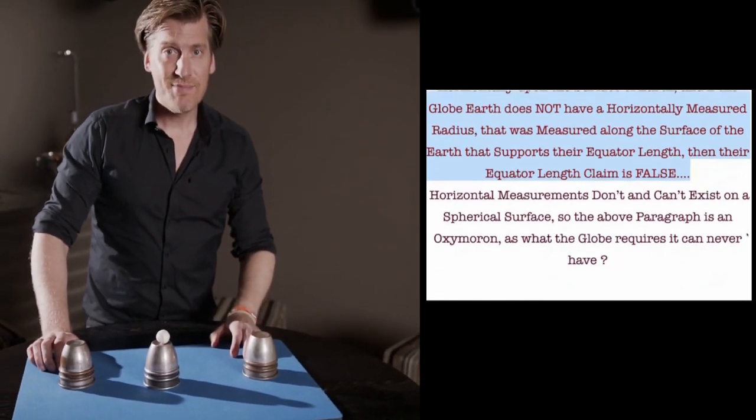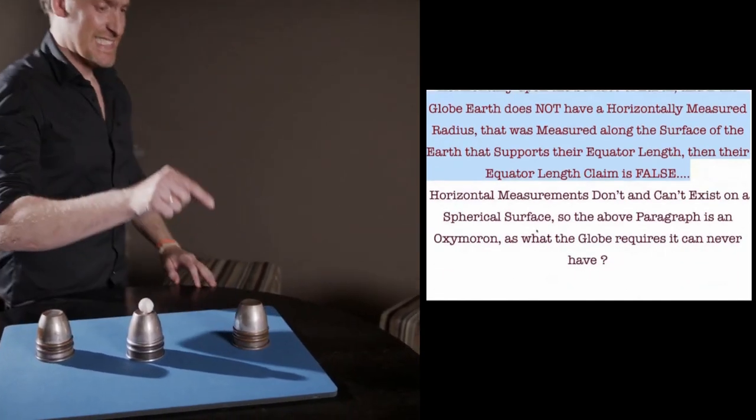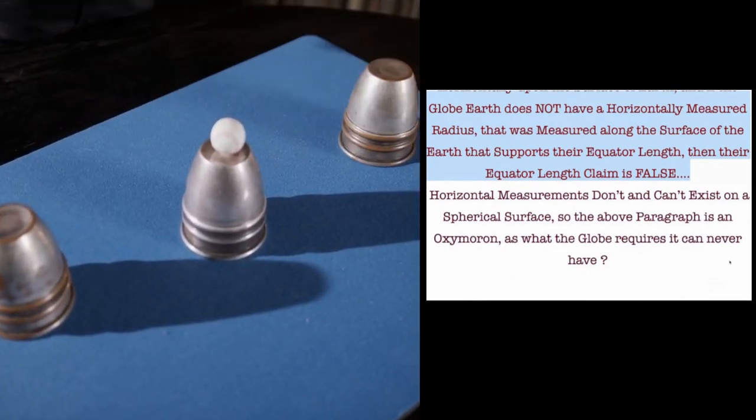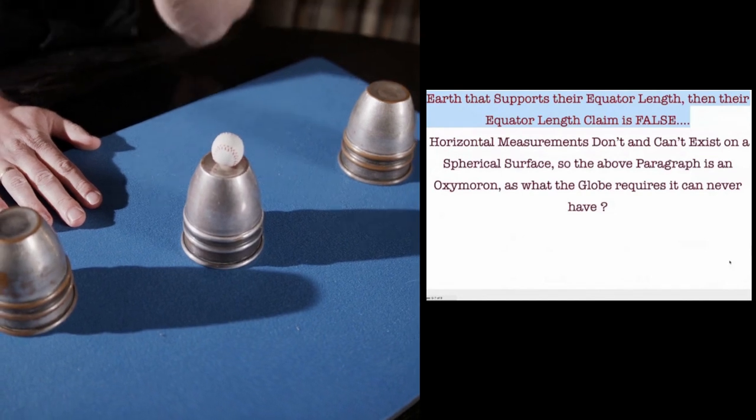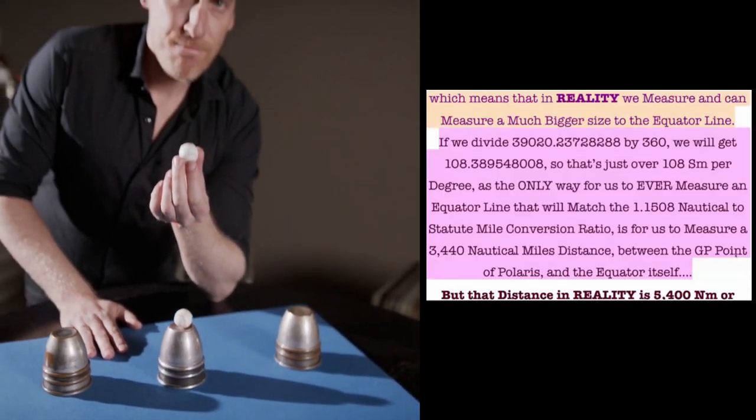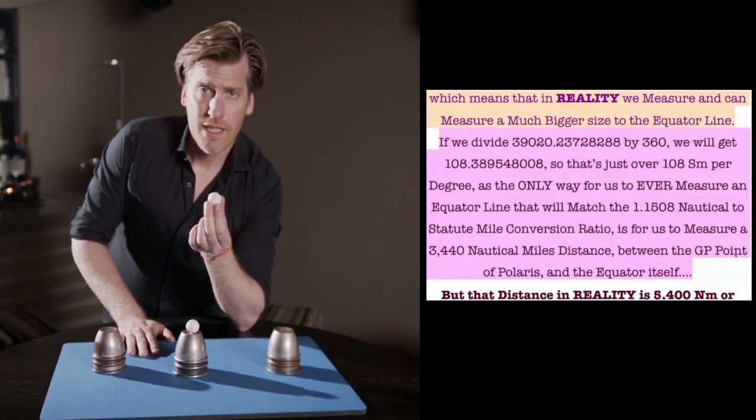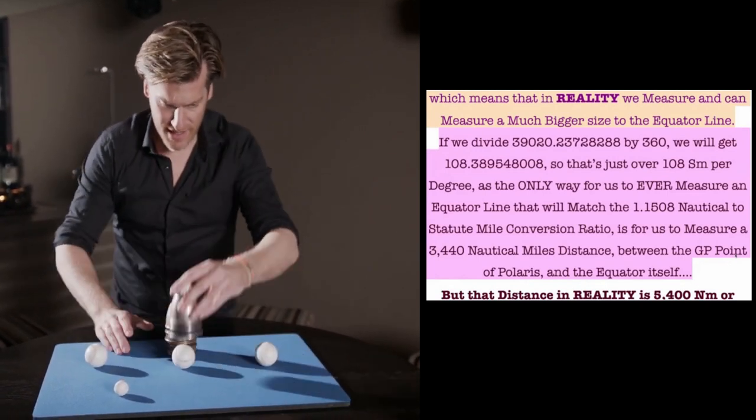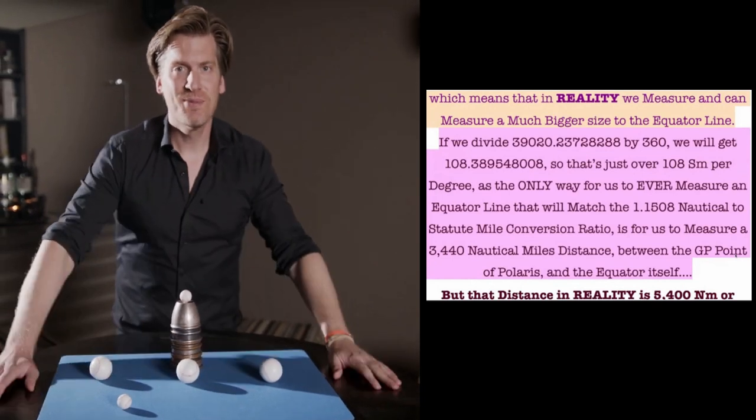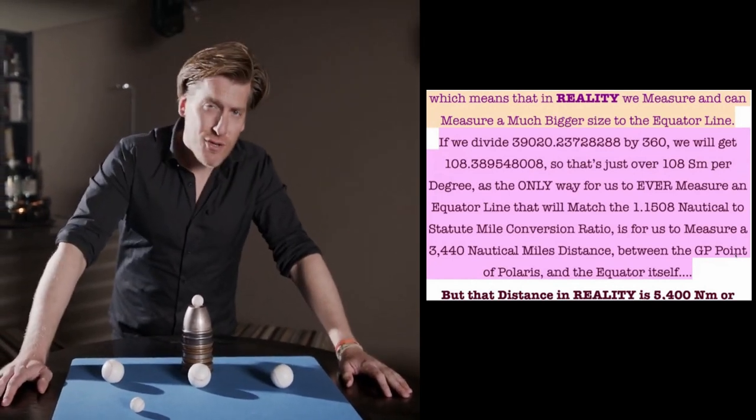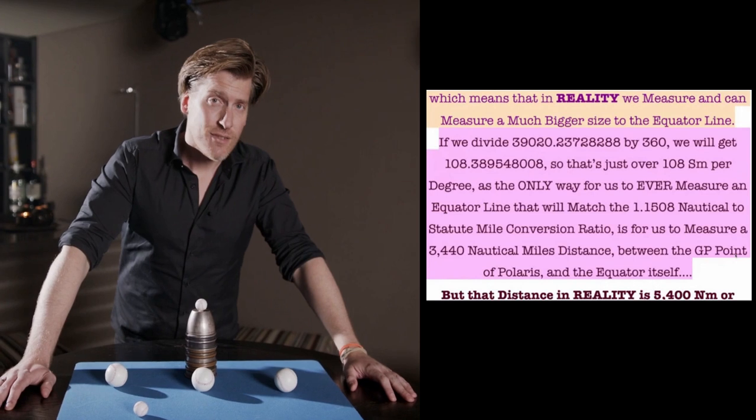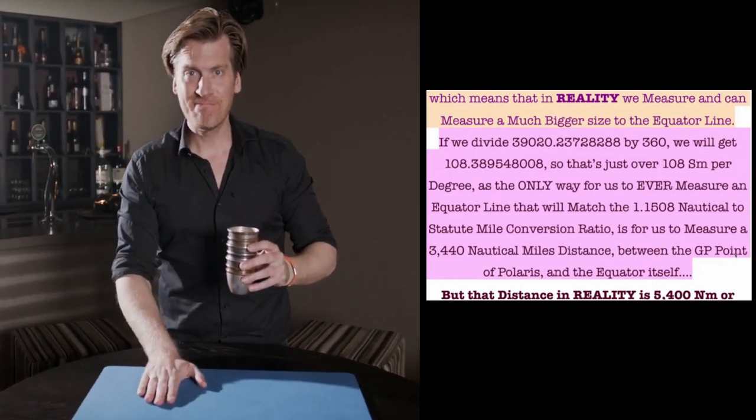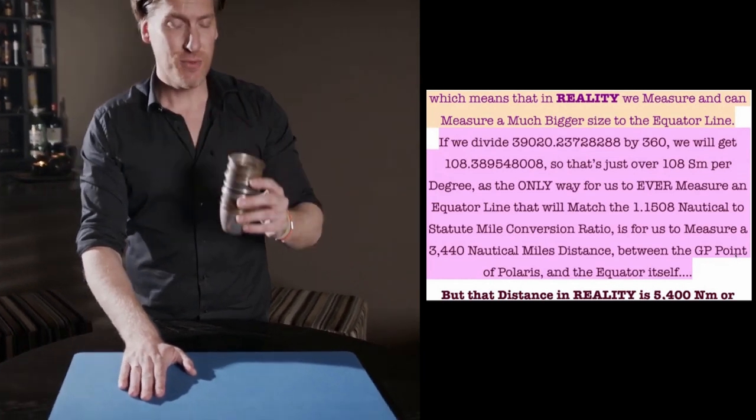Horizontal measurements don't and can't exist on a spherical surface, so the above paragraph is a nautymoron. As what the globe requires it can never have. They can't have what they need to make that claim. So before I go on, the only way for us to ever have an equator line that is 24,857 statute miles around is for the straight line distance between the GP point of Polaris and the equator to be 3440 nautical miles. But it's not, it's 5400 nautical miles.